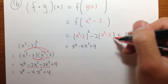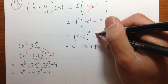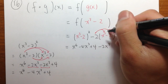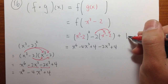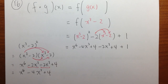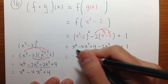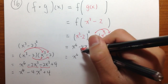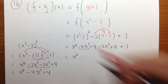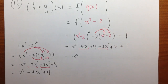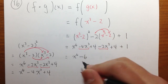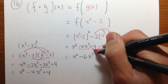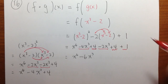Now move to the middle term. I need to distribute the negative two to x to the third power minus two: that gives negative two x to the third power, and then negative two times negative two gives plus four. And at the end we have plus one. Now, is there anything we can combine? x to the sixth is by itself. But we see negative four x to the third power and also negative two x to the third power — together that's negative six x to the third power. The constants: four plus four is eight, plus one is nine.